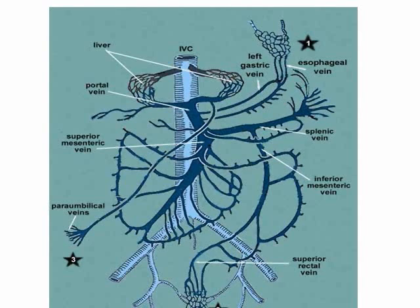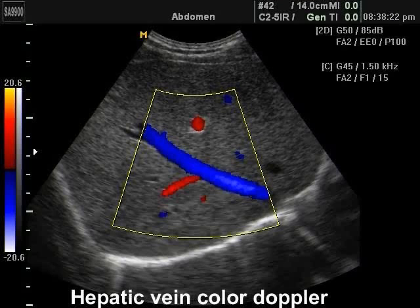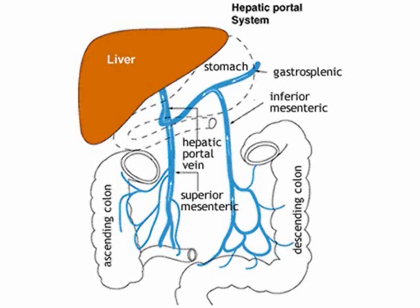This is a color Doppler of the hepatic vein. This is also a picture of the portal vein with the confluence that begins with the union of the splenic vein and the superior mesenteric vein. Note that the inferior mesenteric vein finishes in the splenic vein. All the blood of the digestive system needs to pass to be cleaned in the liver before re-entering in the IVC.